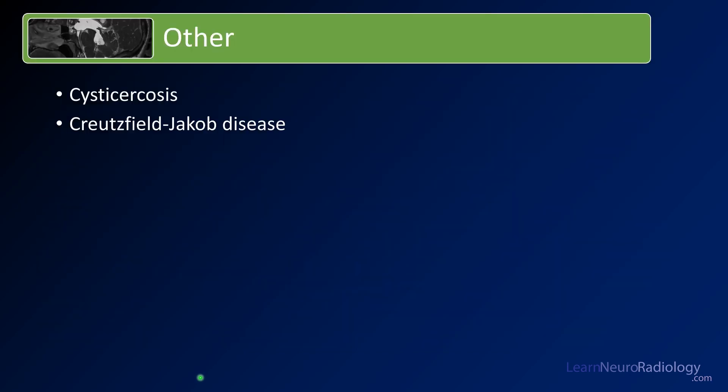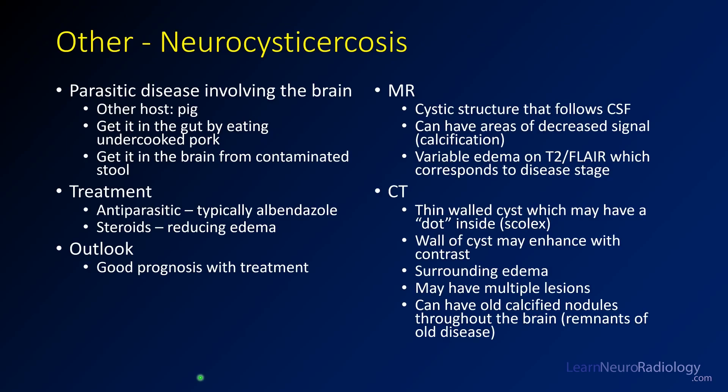There are two diseases we're going to talk about here. One is cysticercosis, which is a parasite, and the other is Creutzfeldt-Jakob disease, or CJD. Cysticercosis involves the brain and has a life cycle involving the pig. It infests the gut by eating undercooked pork, and then through water contaminated by feces, you can get the organisms within the brain. Treatment is with antiparasitic agents, typically albendazole, and some steroids may also be used to reduce edema. The outlook is quite good with treatment.